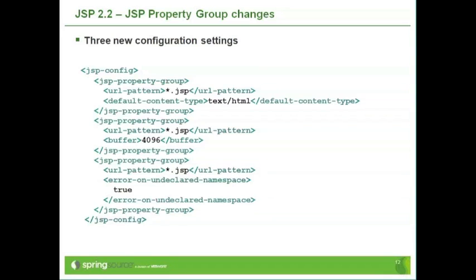That last one is actually quite useful. Prior to JSP 2.2, if you used a tag in a JSP page that you hadn't declared, it would just get silently ignored. So if you made a typo in, say, the library name, that wouldn't necessarily get picked up unless you noticed that whatever you're expecting the tag to provide wasn't there.